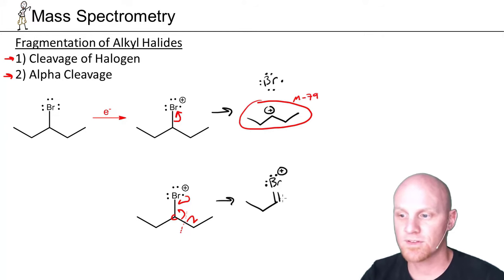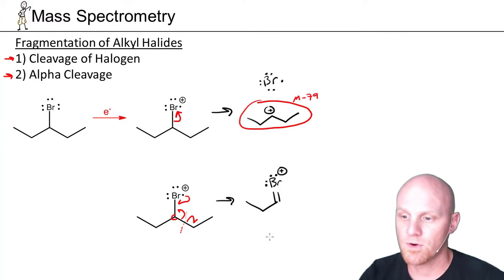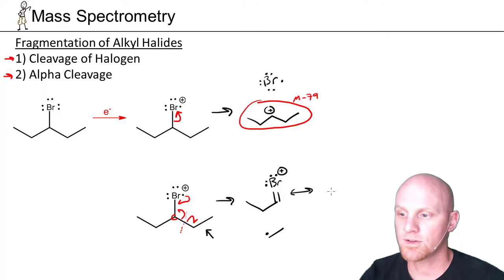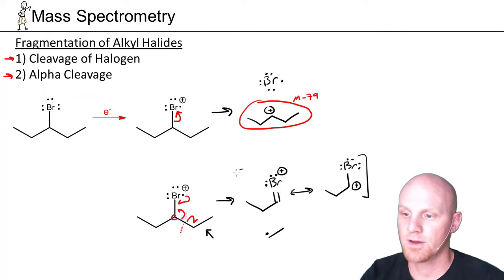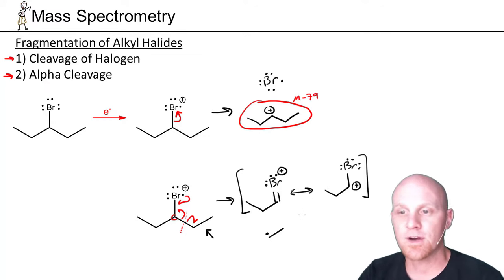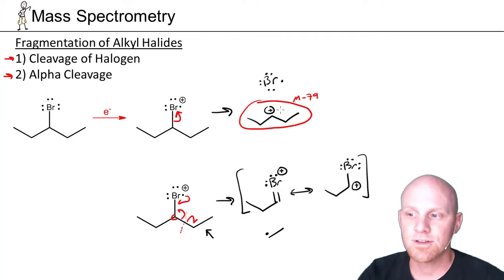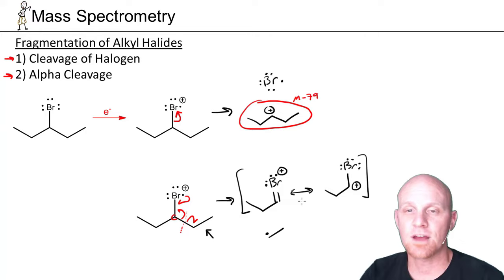This gives a positive charge on the bromine, which is resonance-stabilized with a positive charge on the carbon as well. We also form a two-carbon radical on the other side. Notice this ion is indeed resonance-stabilized, with the positive charge shared on the carbon, forming a resonance-stabilized cation. This is a fairly stable and very common fragmentation pattern for alkyl halides — either cleavage of the halogen or alpha cleavage, both forming fairly stable fragments.